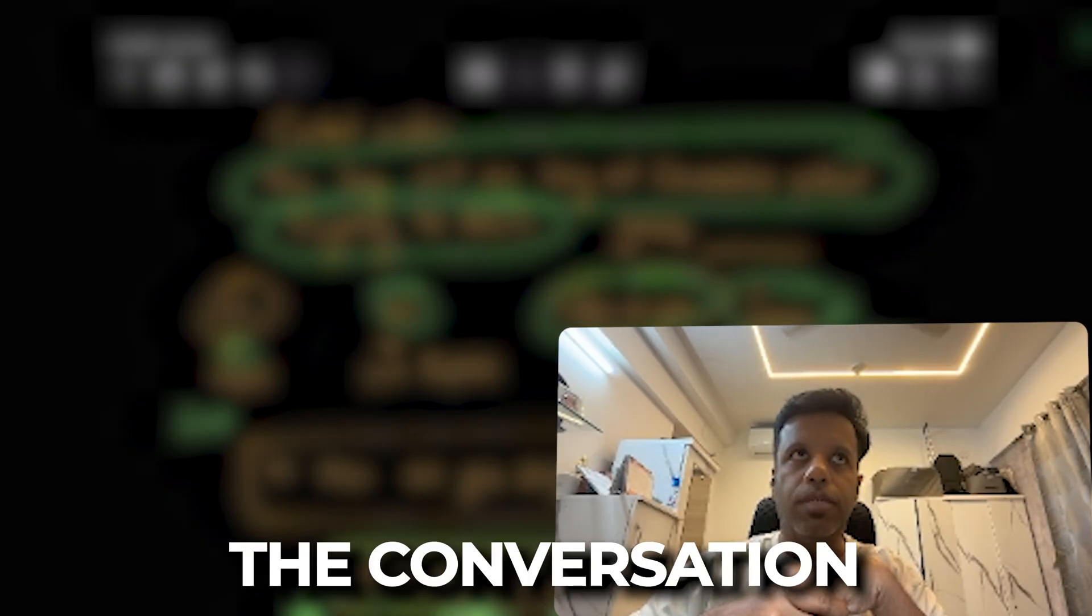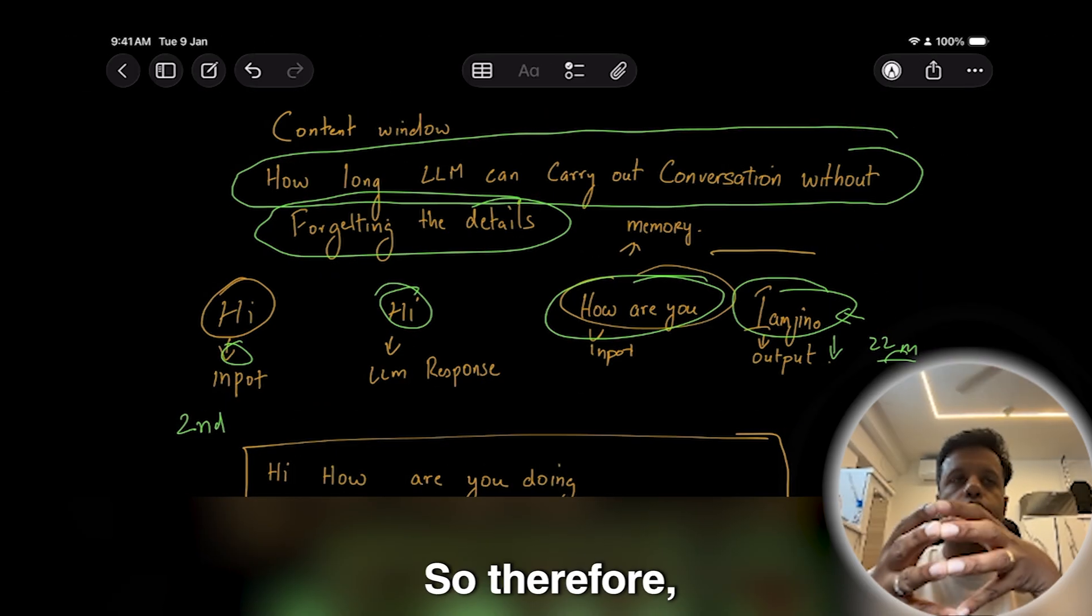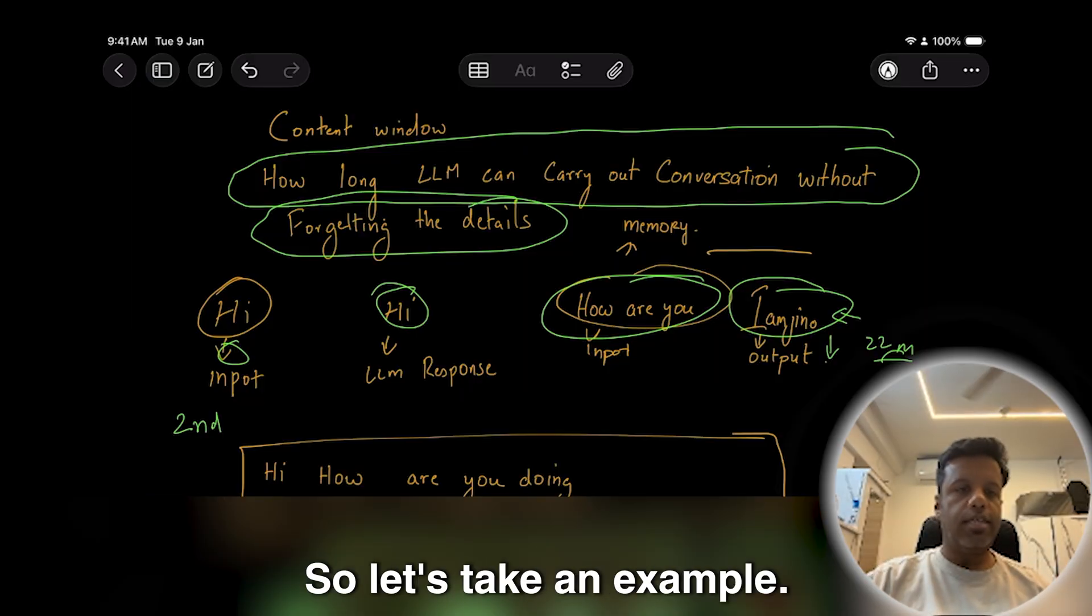LLMs will forget the conversation because you can't store so much information in your memory. So therefore, there is a window that is set. So let's take an example.